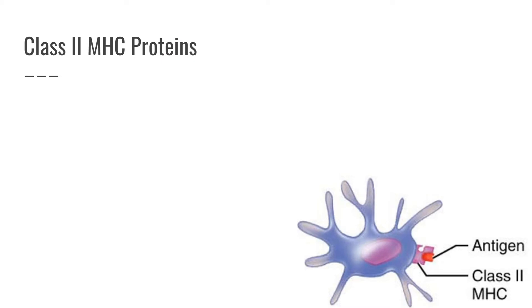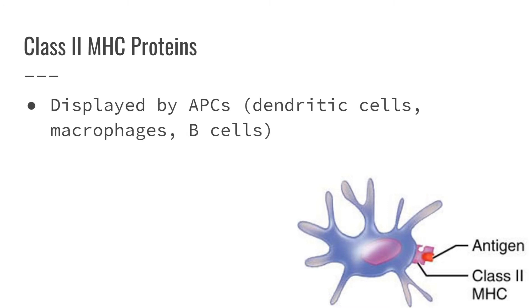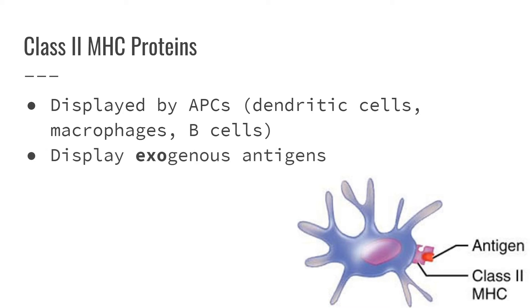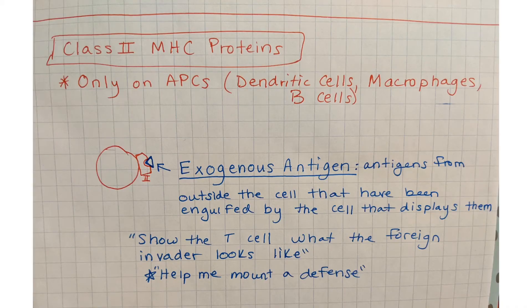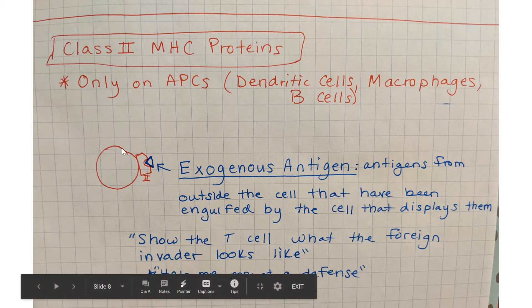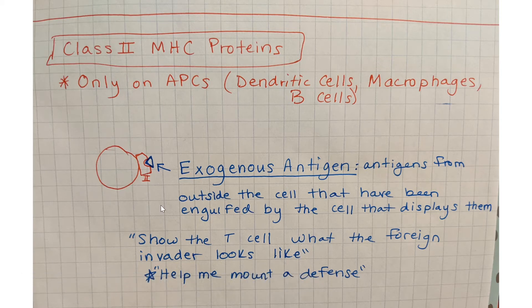Class 2 MHC proteins are rare. They're only going to be found on antigen-presenting cells — those are dendritic cells, macrophages, and B cells. Class 2 MHC proteins display exogenous antigens; 'exo' means from the outside. So they're going to display antigens that they did not personally make. Instead, they would consume a pathogen and then display little fragments of it on their surface. The purpose of a class 2 MHC is that T cells can't see antigens unless they're being presented, so we need a class 2 MHC protein to show the T cell what the antigen looks like.